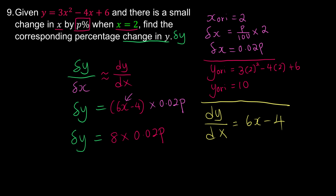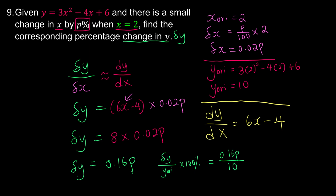So delta y equals 0.16p. We are done finding the small change in y. But they ask for the percentage change, so we take delta y divided by y original times 100%. That is 0.16p divided by 10, times 100%, which simplifies to 1.6p%. That is our final answer.